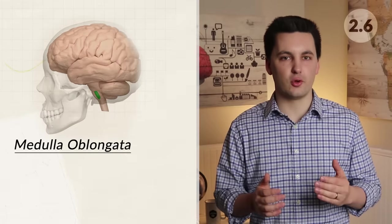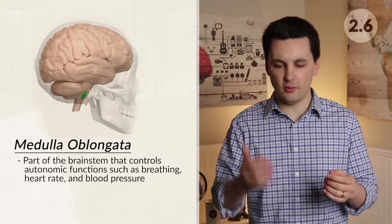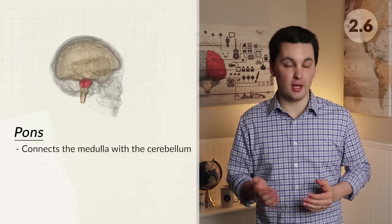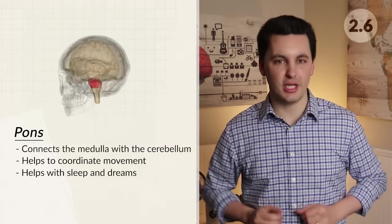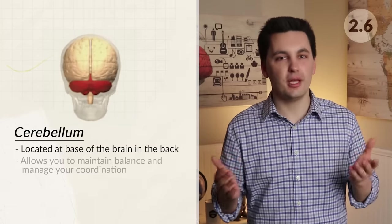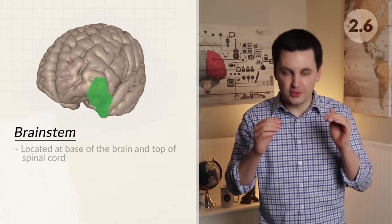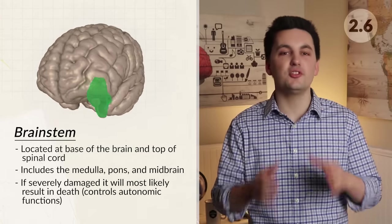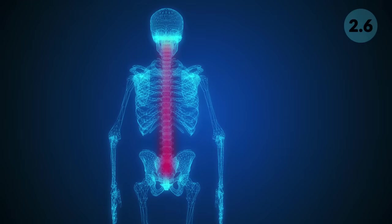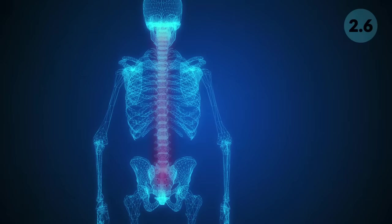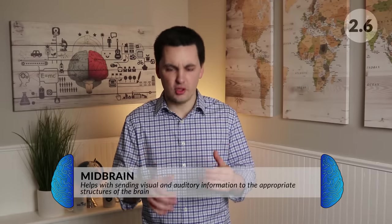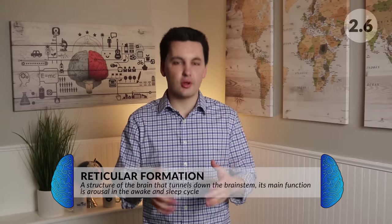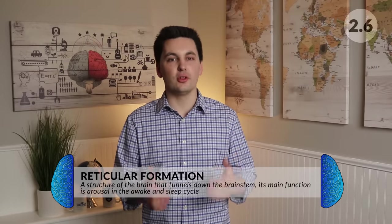The medulla oblongata is right above the spinal cord and below the pons, helping regulate a person's cardiovascular and respiratory system — it takes care of autonomic function. The pons is the bridge between different areas of the nervous system, connecting the medulla with the cerebellum and helping to coordinate movement; one of its main functions is to help with sleep and dreaming. The cerebellum is located at the base of the brain in the back and allows you to maintain balance and manage coordination. The brain stem is located at the base of your brain and includes the medulla, pons, and midbrain — if severely damaged it will most likely result in death since it controls autonomic function. The spinal cord connects your brain to the rest of your body — think of it as the information highway. The midbrain helps send visual and auditory information to the appropriate brain structures — think of it as a relay station. The reticular formation tunnels down the brain stem, with its main function being arousal in the sleep and awake cycle.